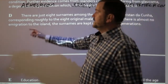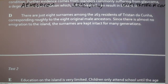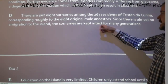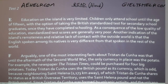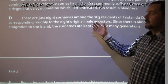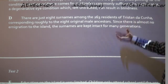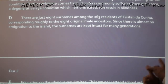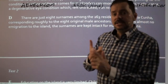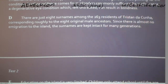Paragraph D: there are just eight surnames among the 263 residents of Tristan da Cunha, corresponding roughly to the eight original male ancestors. Since there is almost no emigration to the island, the surnames are kept intact for many generations. That was a very short paragraph about the surnames of the inhabitants. So B was discovery and military use; C was genetic disorders; and D is now about the names.